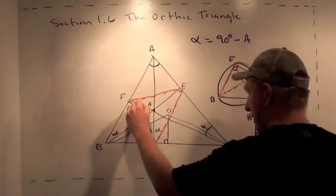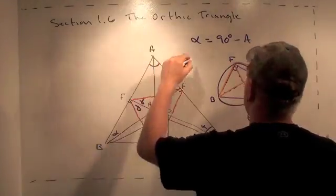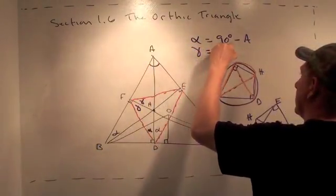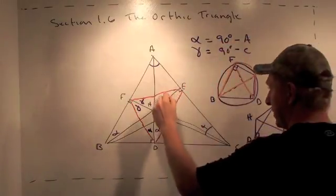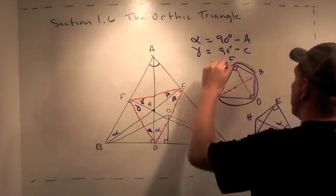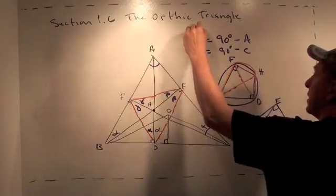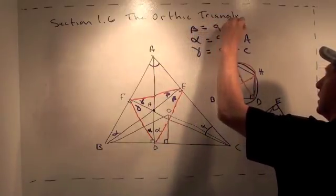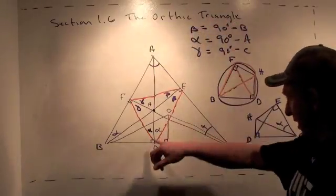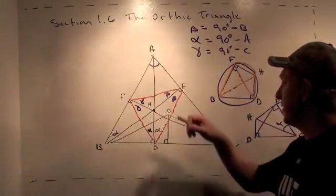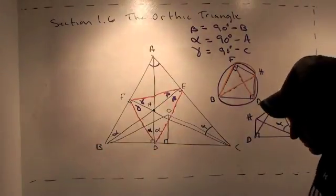I'll call this gamma, gamma, which is 90 degrees minus C. And I'll call this angle beta, 90 degrees minus B. So, the angle bisectors of the Orthic Triangle are the altitudes of the big triangle.